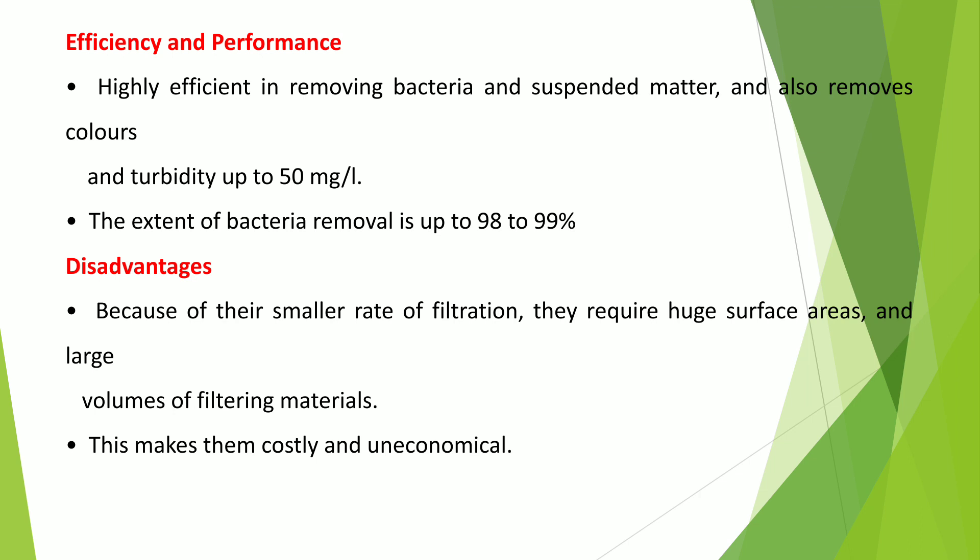Slow sand filters are highly efficient in removing bacteria and suspended matter, removing colors and turbidity up to 50 mg/L, with bacteria removal up to 98 to 99%. The main disadvantage is the very small rate of filtration, which is the actual meaning of 'slow' sand filter. Because of this slow filtration rate, they require huge surface areas and large volumes of filtering materials, making them costly and uneconomical.